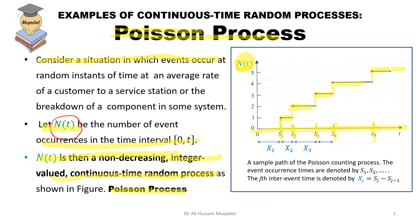What you see in the figure on the right is a sample path or realization of the Poisson process. The event occurrence times are S1, S2, and so on. The inter-arrival time is denoted by x, where each inter-arrival time is referred to as a random variable.